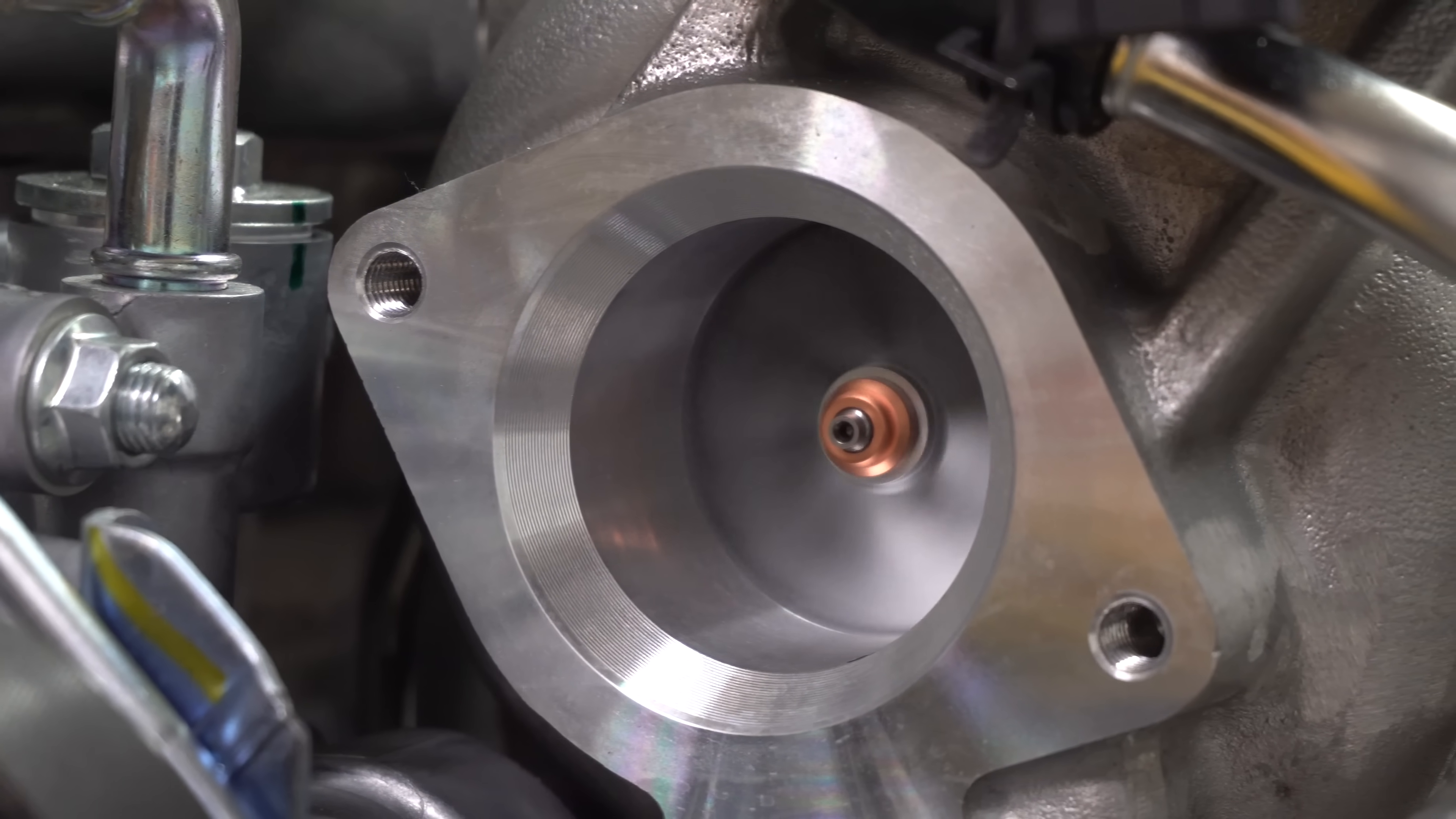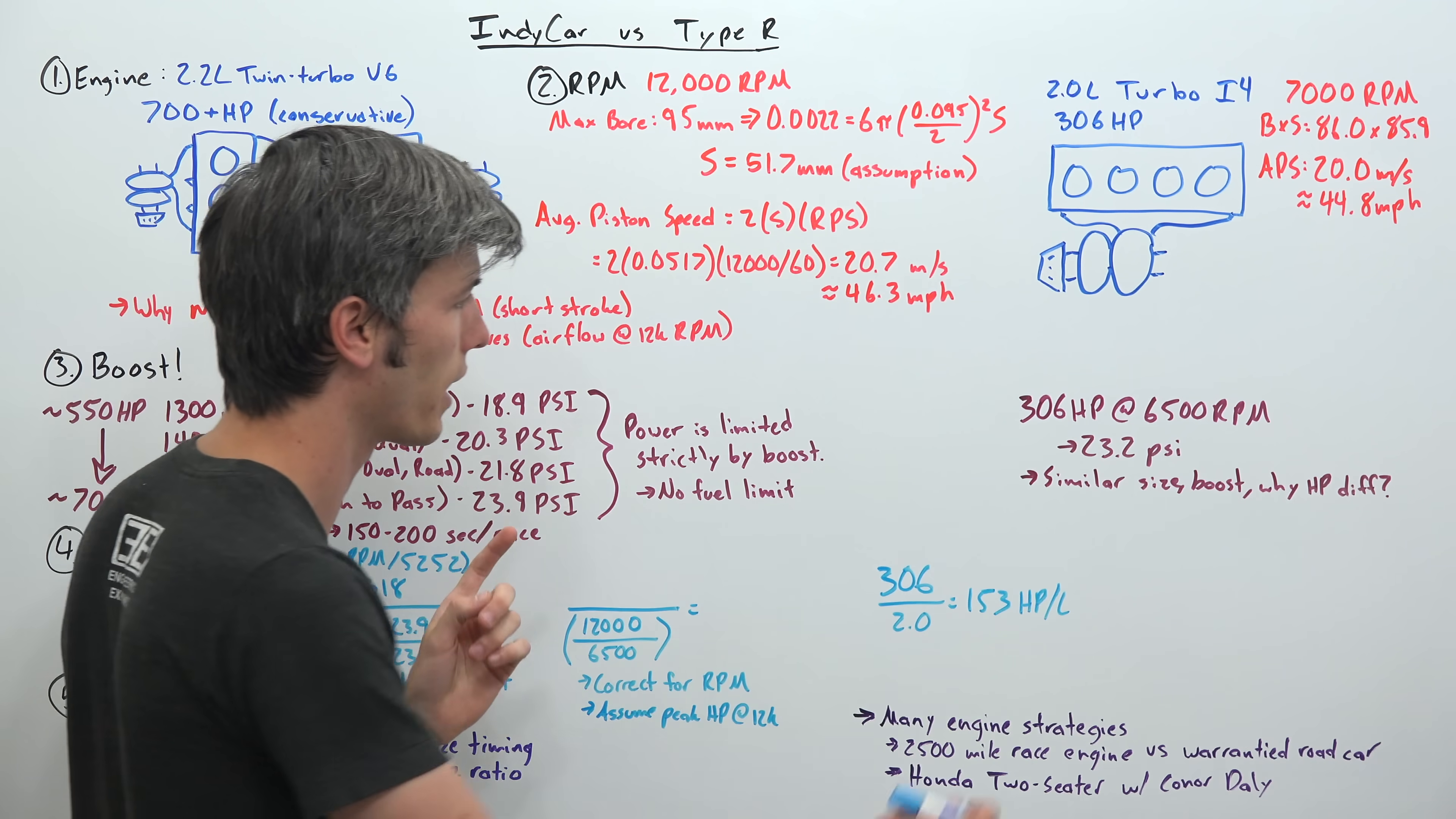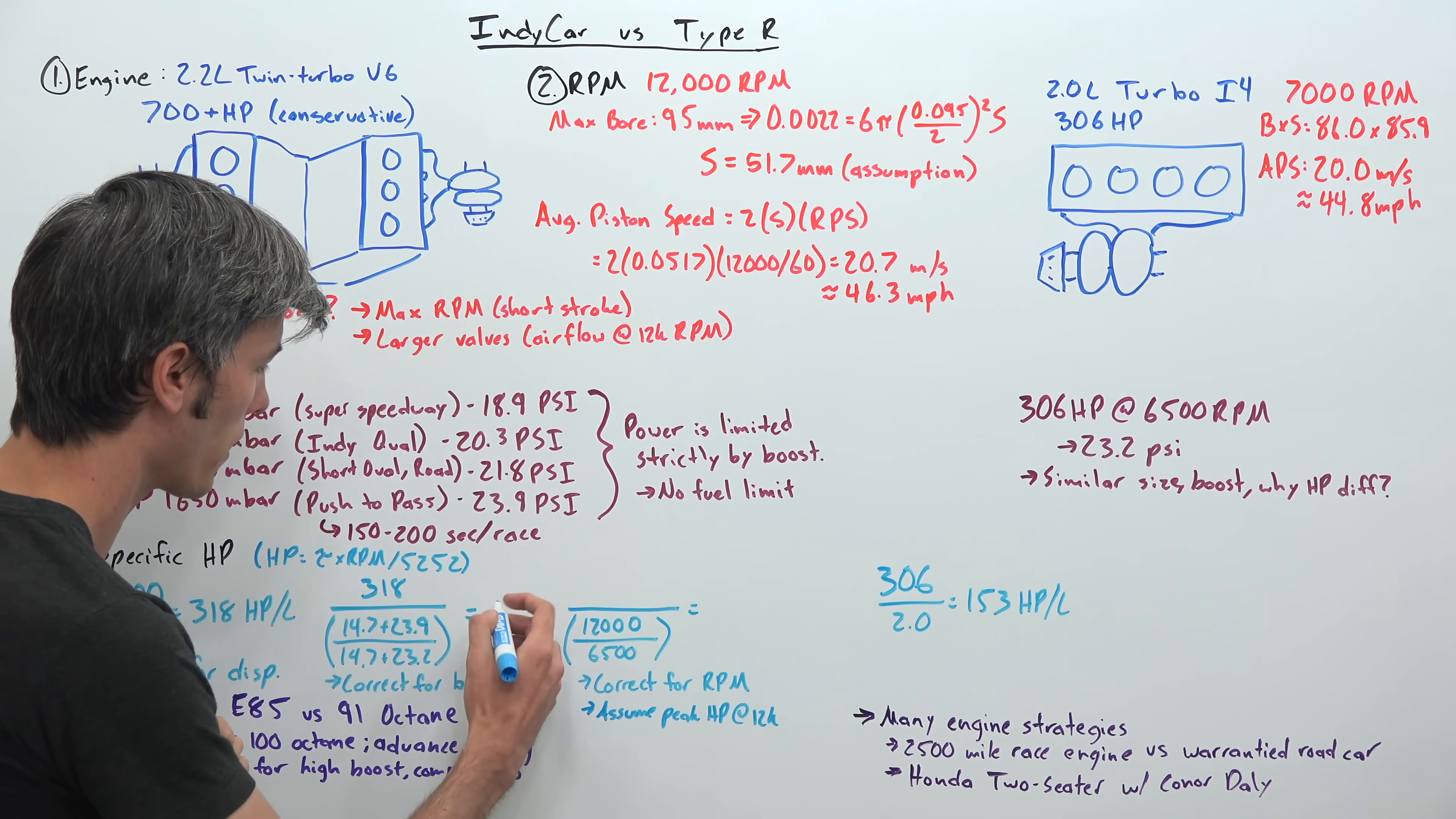So now that we've corrected for displacement, we're going to move on to boost. So it is running slightly higher, 23.9 versus 23.2. So if we do the small correction for the little addition of boost that it has, we get about 312 horsepower per liter.